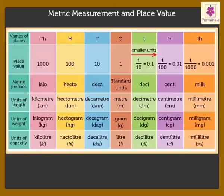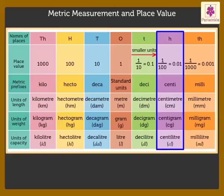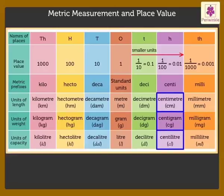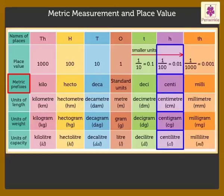The units in the hundredths column are one hundred times smaller than, or one hundredth of, the standard units. We name these as centimeter, centigram, and centiliter, as the prefix 'centi' means one hundredth.